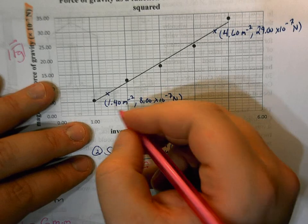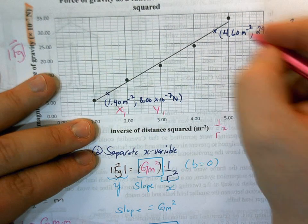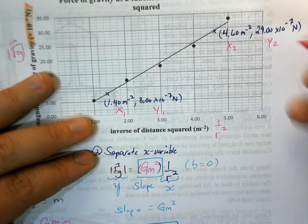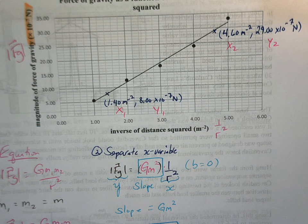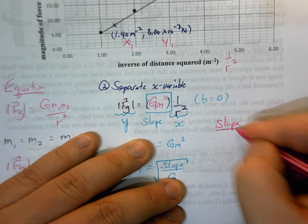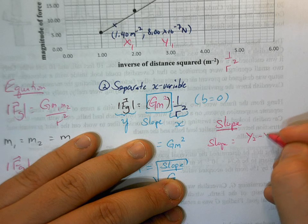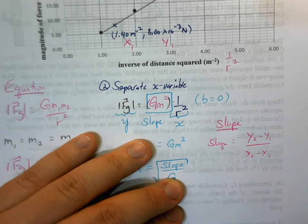So to get my slope, I got to do y change in y over change in x. So I could say this is x1 and y1. We'll say that that's x2 and y2. So using that information, I am going to determine the slope.